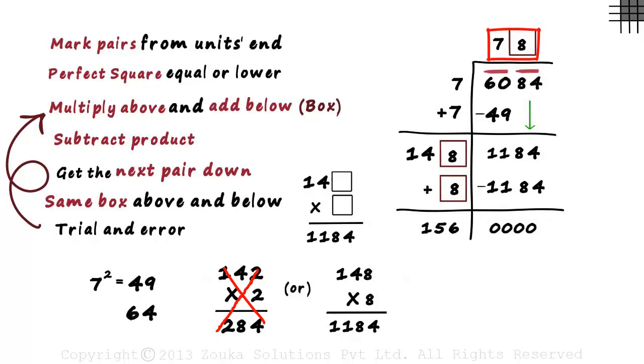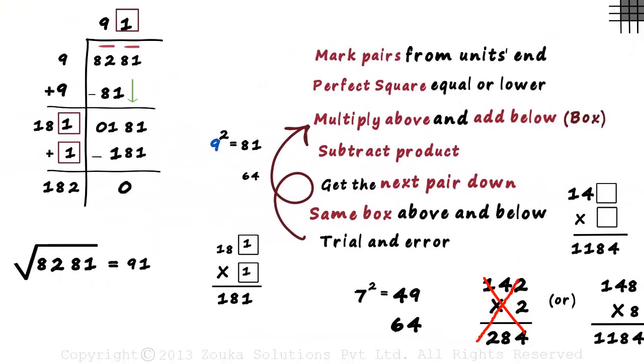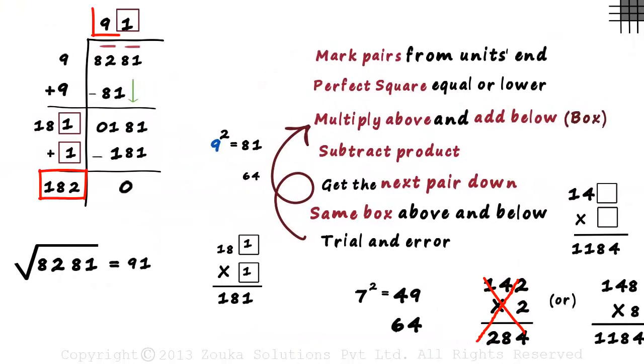The number at the top is the square root. We get the square root of 6084 as 78. How do we check if our answer is correct? One way is to multiply the answer with itself and see if we get the original number. The other way is interesting. This number here will always be twice of the answer. 156 is 78 multiplied by 2. In the previous example, 182 is the double of 91.